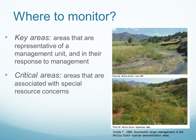Another question is where monitoring should occur. Usually, we set up monitoring either in key areas or in critical areas. Key areas are those that are representative of a management unit and how it responds to management. Critical areas are those associated with special resource concerns, such as riparian areas or areas where there are species of concern.